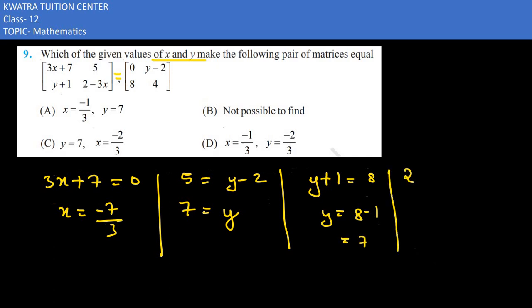Fourth element would be 2 minus 3x is equal to 4. So minus 3x is equal to 4 minus 2, which is 2. Minus 3x is equal to 2, so what will your value be equal to x? Minus 2 by 3.